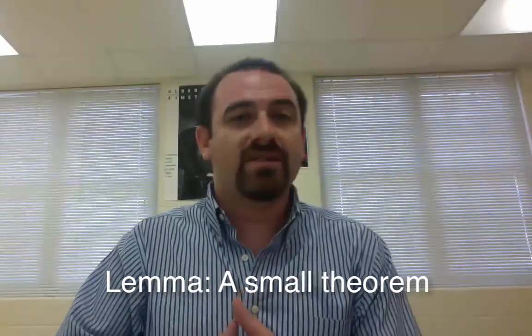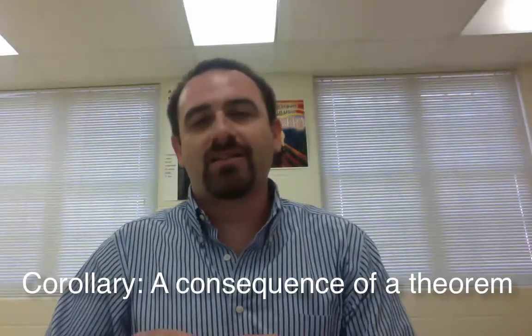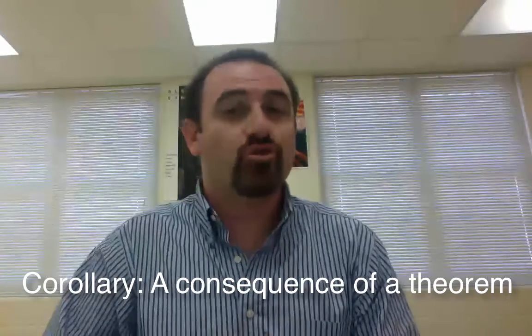A corollary is something, typically, that we use after we have a theorem. So we get a theorem, and a corollary is a byproduct of a theorem that takes very little proof to get from the theorem to the corollary. So it's a little bit like, like I said, it's almost like an afterthought. This also is true.